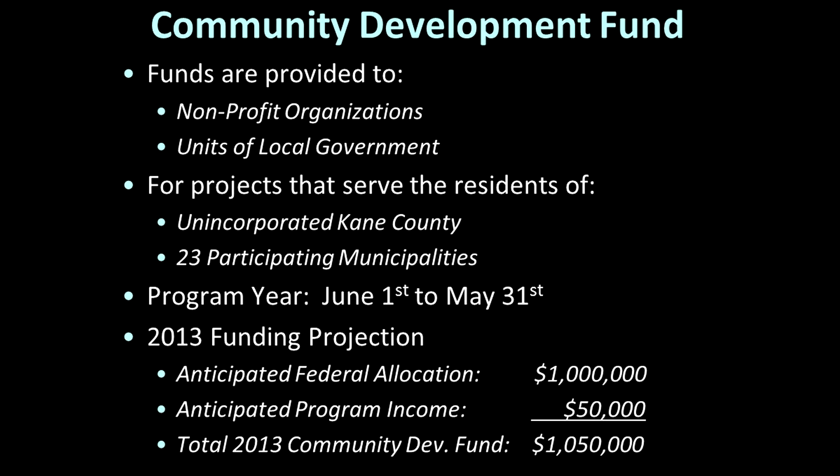Kane County's community development program runs on a fiscal year that begins on June 1st and runs through May 31st. So the application cycle we're kicking off now is for funding expected to be available in mid-2013. Although we don't yet know the exact amount of our 2013 federal allocation, we are projecting up to $1 million will be available — though this amount could be less depending on Congressional budget deliberations. When we add another $50,000 in program income from the repayment of housing rehabilitation loans, we project the county will have a total community development fund of $1.05 million for 2013.